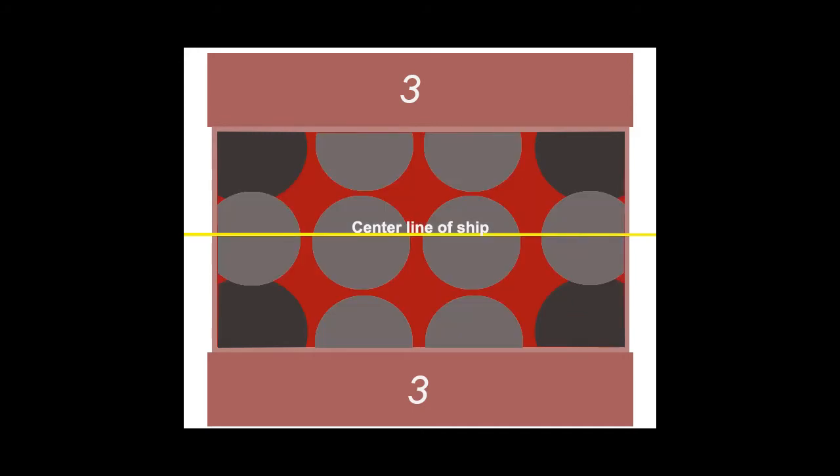Occasionally the foreman will tell you that the stow in a particular hatch is a blend. This means more than one type of coal will be loaded into the same hatch. The different types of coal must be stowed in layers. So in this situation, the operator would not be making two large piles on the first pour.